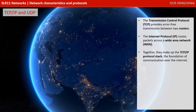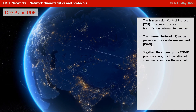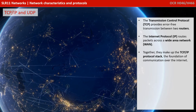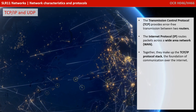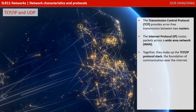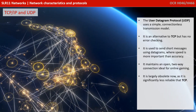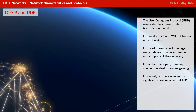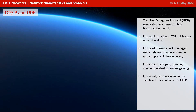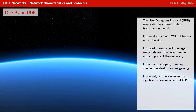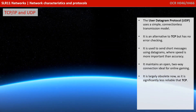First, TCP/IP and UDP. The Transmission Control Protocol (TCP) provides error-free transmission between routers. The Internet Protocol (IP) routes packets across a wide area network. Together, they make up the TCP/IP protocol stack — the foundation of communication over the internet. The User Datagram Protocol (UDP) uses a simple connectionless transfer model. It's an alternative to TCP but doesn't have any error checking. It's used to send short messages using datagrams where speed is more important than accuracy. It maintains an open two-way connection, which is ideal for online gaming, but is largely considered obsolete as it's significantly less reliable than TCP.